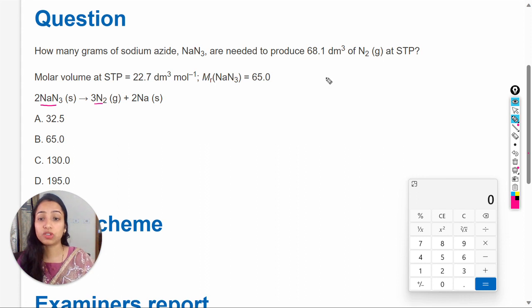First, the volume of N2 gas is given at STP, and the molar volume is provided. This means that 22.7 dm³ of gas at STP conditions equals one mole. So one mole of N2 gas, or any gas, will occupy 22.7 dm³ volume at STP.